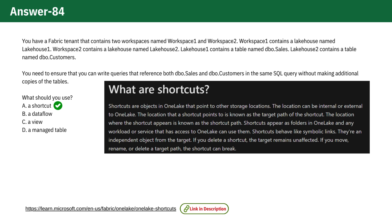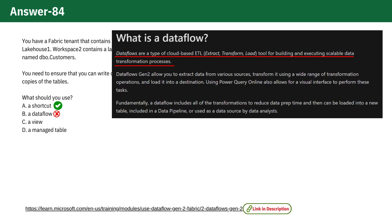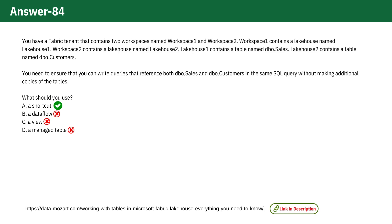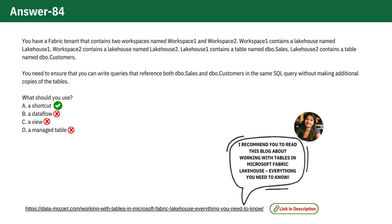All other options are incorrect because option B, data flows are used for transforming and loading data, not for querying tables across different workspaces without copying data. Option C, a view would allow you to create a virtual table based on a query, but it still requires that the tables be in the same database or workspace. Option D, a managed table stores data within a workspace, but using it would involve making copies of the data, which does not meet the requirement of avoiding additional copies.